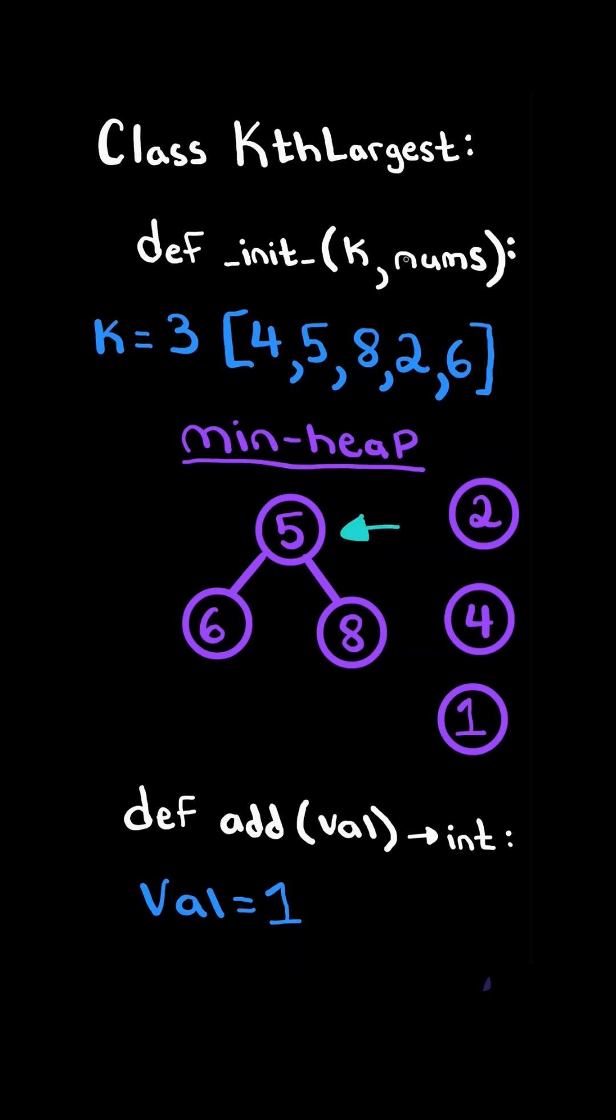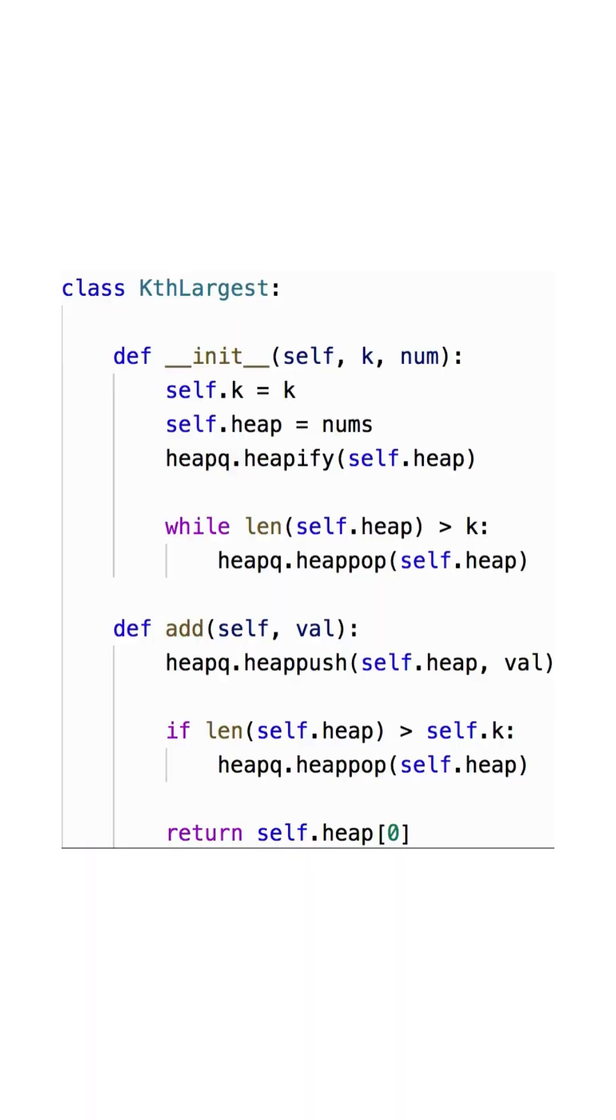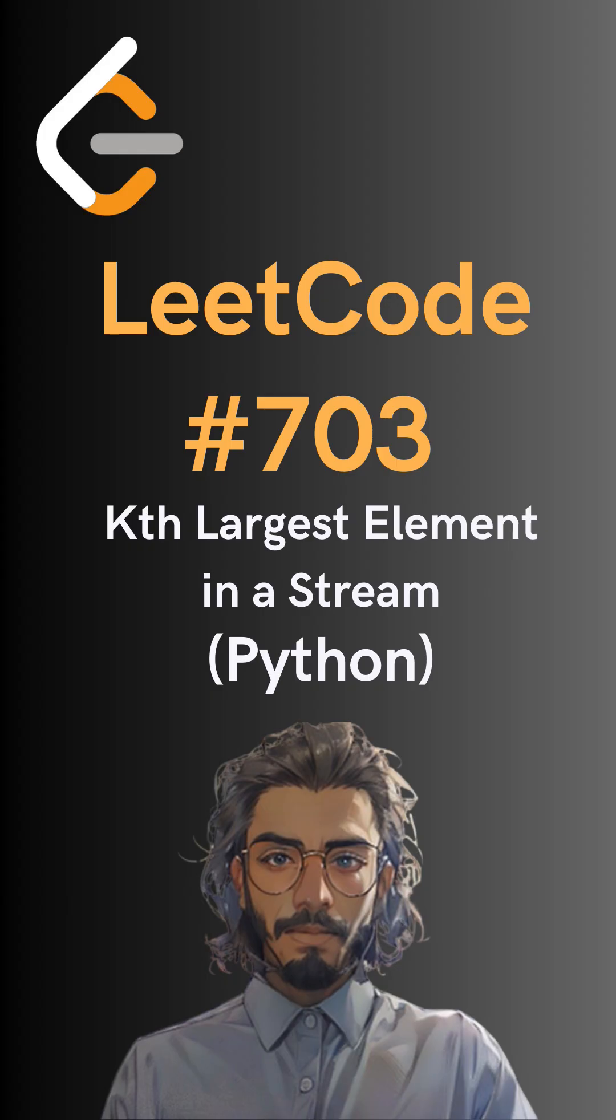Finally, notice the kth largest number is at the root node, and so we return the root's value. And here's the code to do so. Please like and follow for more.